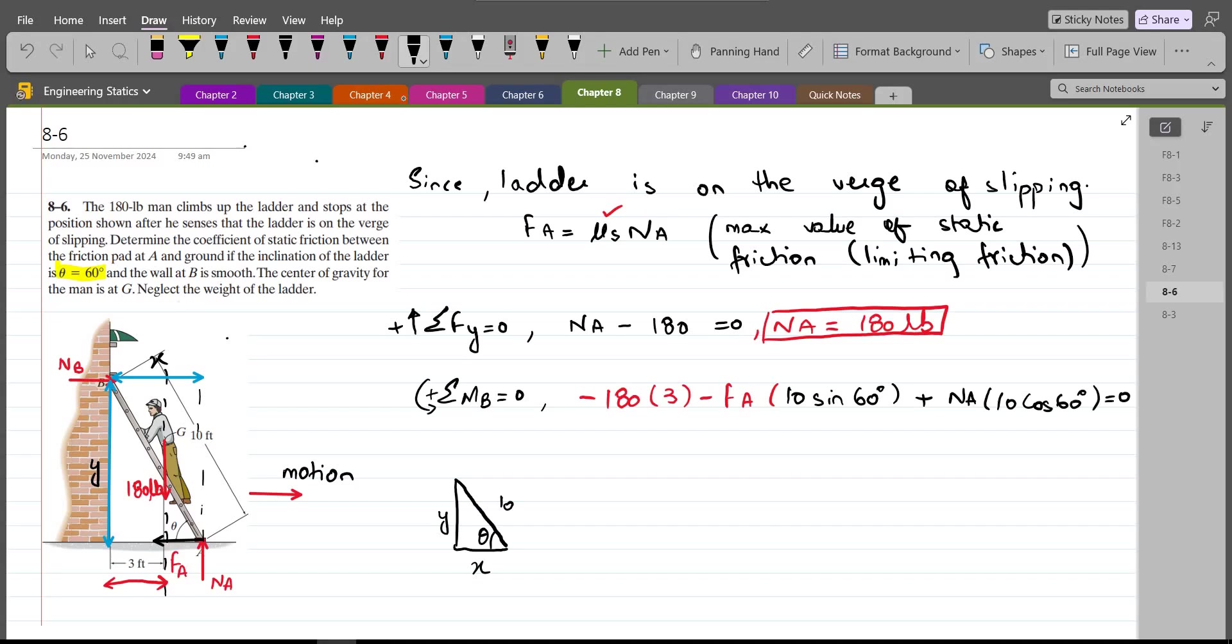So when I substitute the values, I have negative 180 times 3 minus FA into 10 sin 60 degrees plus NA which is 180 lbs times 10 cos 60 equals to 0. So when I simplify it, FA comes out to be 41.57 lbs.